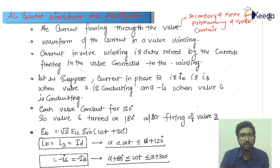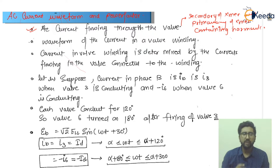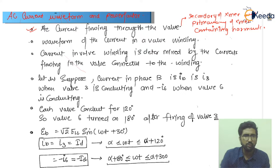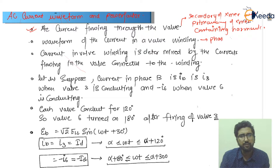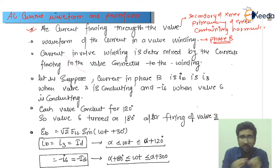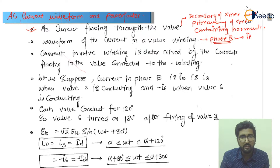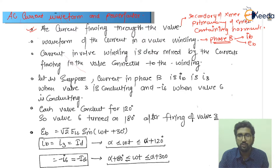The primary of the transformer is containing the harmonics. Now, if we talk about the waveform of the current in the coil winding, I will consider one of the coils conducting with current and having a voltage. Let us take phase B. We have three phases A, B, and C, and I am considering phase B. I will consider the current ib and the voltage eb.